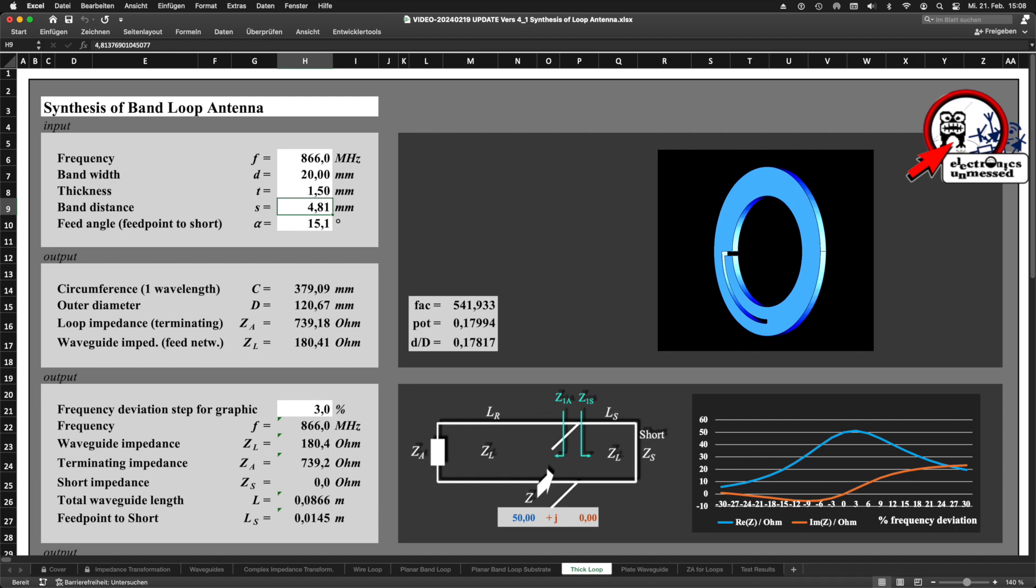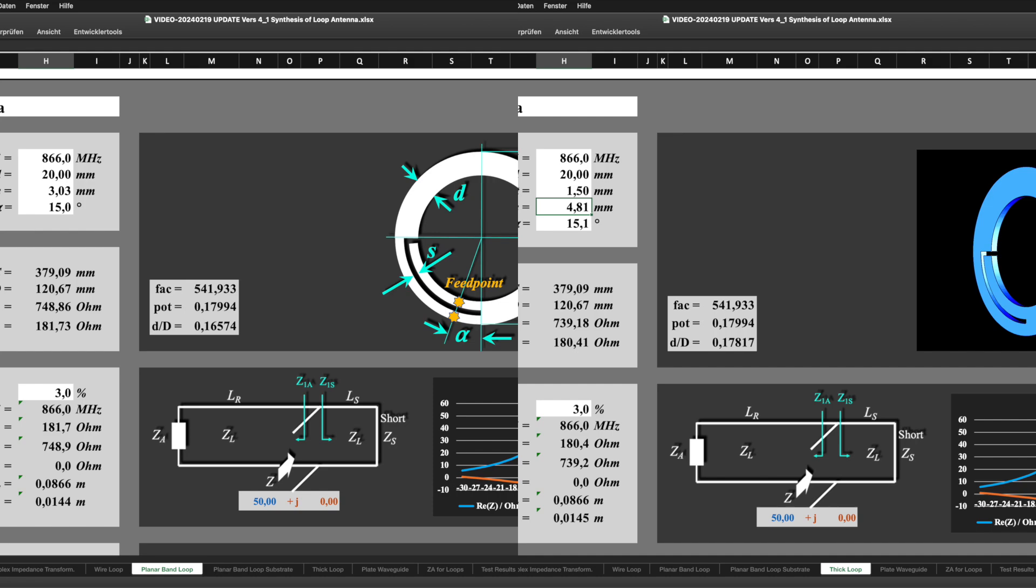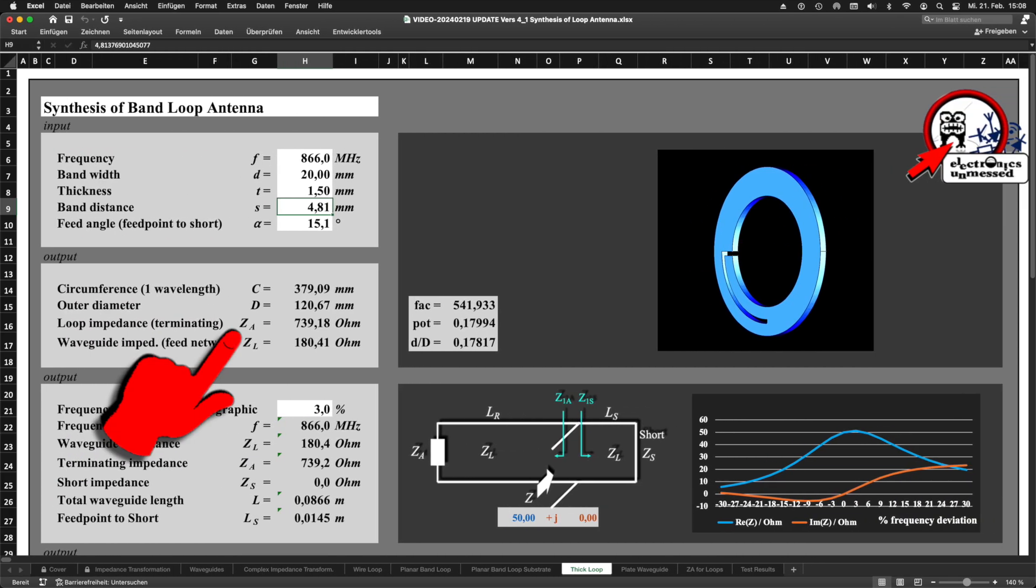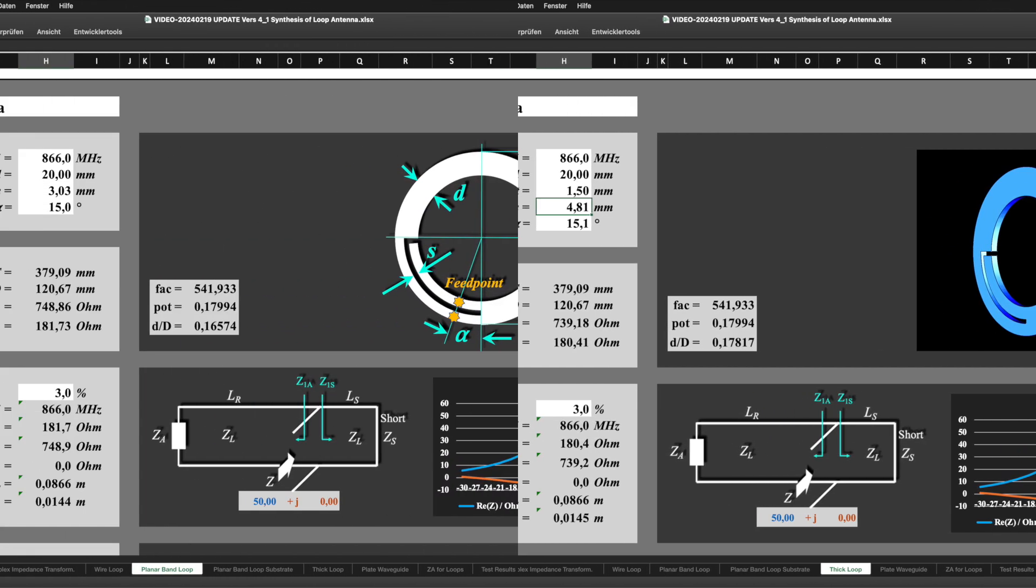I do a plausibility test of my design by comparison of the dimensions with the already proven planar antenna. The outer diameter is exactly the same. The impedance of the ring is slightly smaller, because there is a little more conducting surface now. The impedance of the matching network is almost the same. However, the band distance s is larger, because the thicker material is causing an additional capacitance and thereby reduces the waveguide impedance. So, if the characteristic impedance is to be the same, then the distance between the two conductors must be greater.